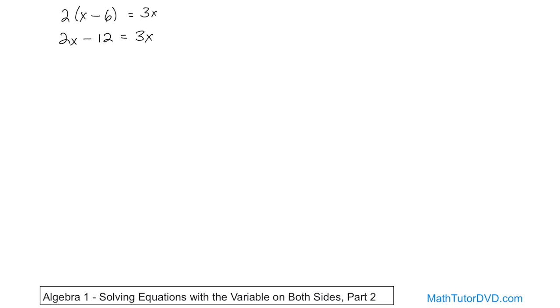Now we need to combine x's. You can either move this over by subtracting 2x or you can move this over by subtracting 3x. It's really up to you. I'm going to subtract 3x from both sides.